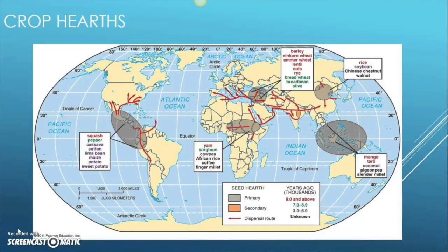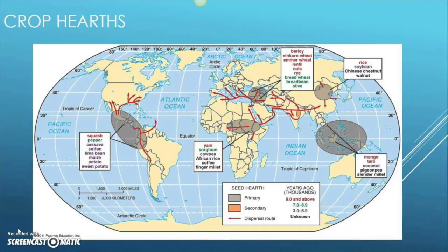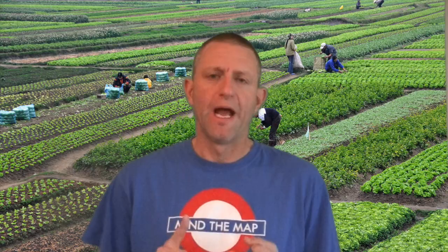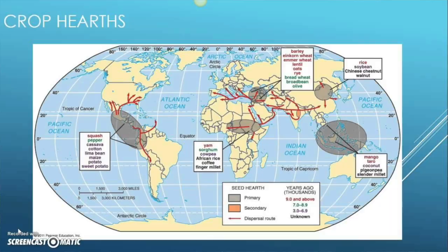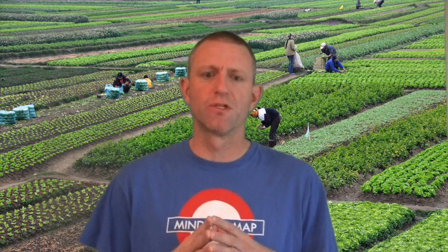In Southeast Asia, about 10,000 years ago, we see things like mango, taro root, and coconut get domesticated. In East Asia, it was rice and soybean, also about 10,000 years ago.